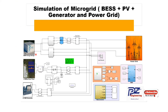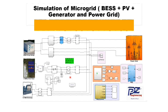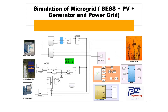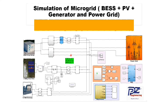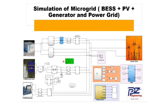Our microgrid is made up of a battery energy storage system, PV array, diesel generator, a power grid or utility grid, inverters, and a load. We also have charging AC to DC and DC to AC inverters, and I'll be introducing each component in more detail and how it operates.